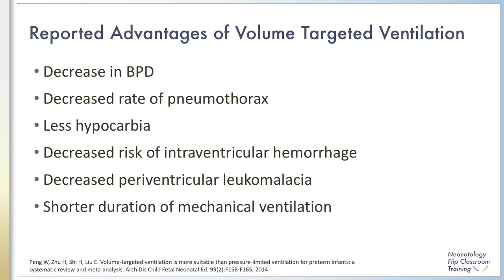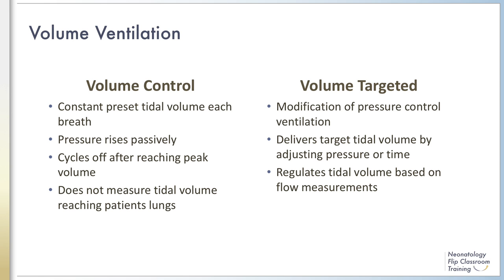In a meta-analysis comparing pressure limited ventilation to volume targeted ventilation, Peng et al. noted that with volume targeted ventilation there is a decrease in BPD, lower rate of pneumothorax, less hypocarbia, decreased risk of intraventricular hemorrhage and periventricular leukomalacia, and a significantly shorter duration of mechanical ventilation. Studies included in the meta-analysis were small and outcomes were not prospectively collected.